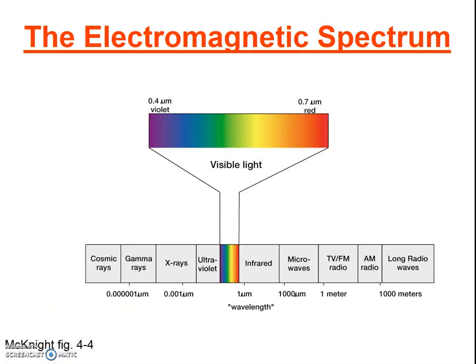Here's the complete electromagnetic spectrum. Note where ultraviolet radiation exists, visible light, and infrared. These are the shorter wavelengths, and then they get longer as you go in that direction.